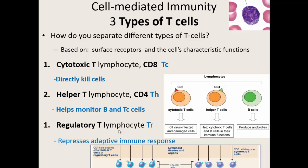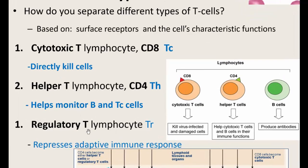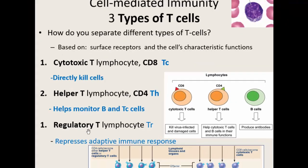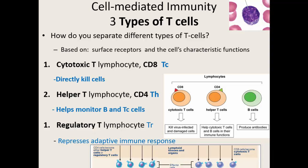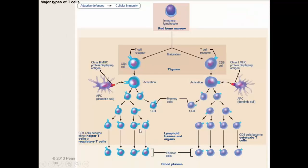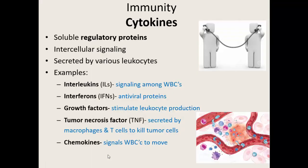So we've got B cells, and different types of T cells. Regulatory T cells are also called CD4 cells. So again: CD8 will become a cytotoxic cell; CD4 will become either a helper T cell or a regulatory T cell.